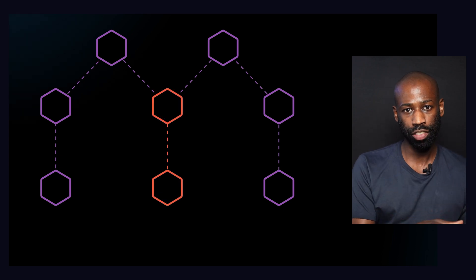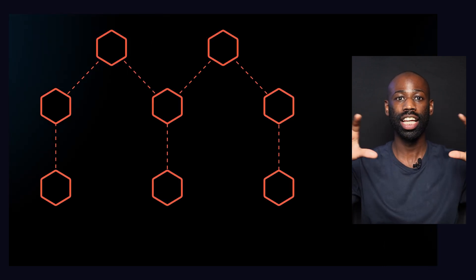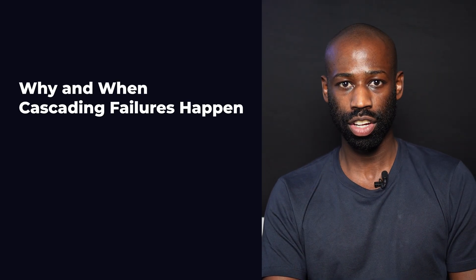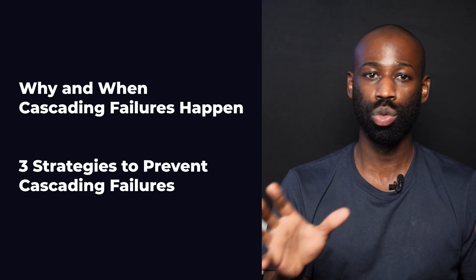Imagine one service failure bringing down your entire system. This is what happens when you don't have the right safeguards in place. I've worked with microservices and distributed systems for years, and in this video I'll show you why and when cascading failures happen and three strategies to prevent them.